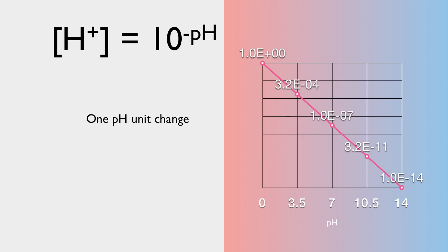From 1 down to 3.2 times 10 to the minus 4, down to 1 times 10 to the minus 7. These are big jumps for just small changes in pH. Hydrogen ion concentration and pH are inversely related. One goes up, the other goes down, and vice versa.